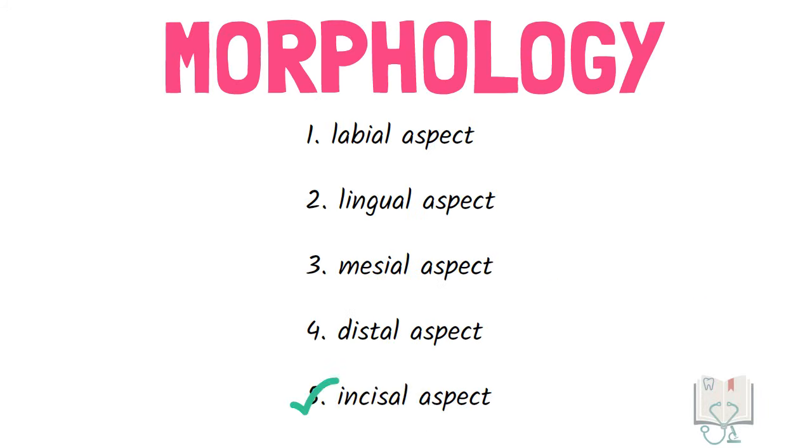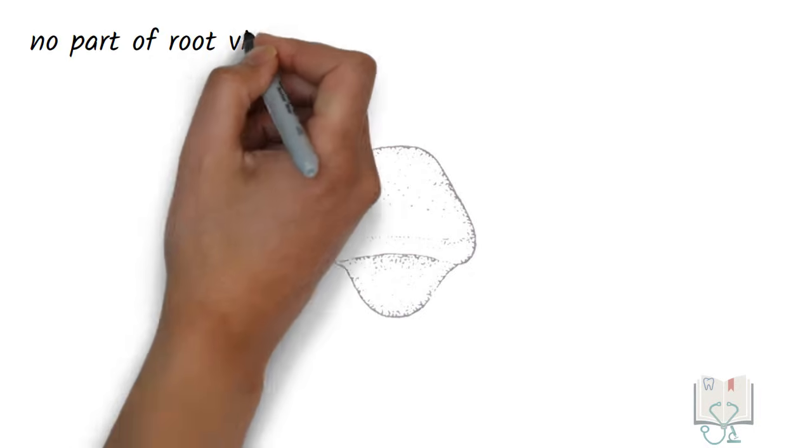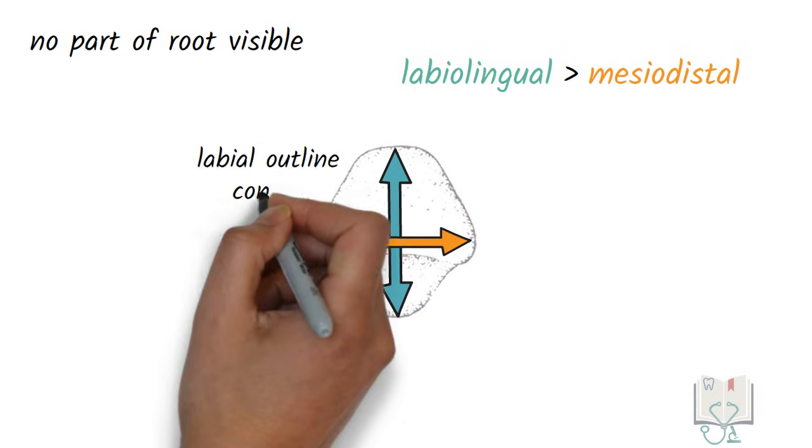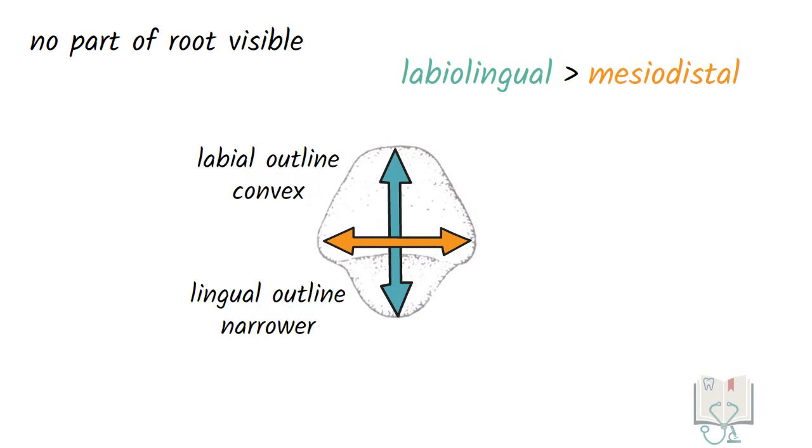Finally, the incisal aspect. As with all permanent teeth, no part of the root is visible from the incisal aspect. The labial lingual diameter is more than the mesodistal diameter. The labial outline is smooth and convex and the lingual outline is narrower, showing the lingual convergence which is a feature of all anterior teeth.